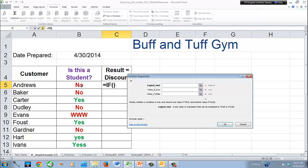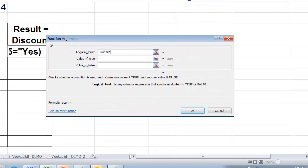B5 equals, open quotation marks, type the word yes, close quotation marks, and press tab or enter to move to the next field, to the next argument. Value if true, 0.5, press tab, value if false, 0.